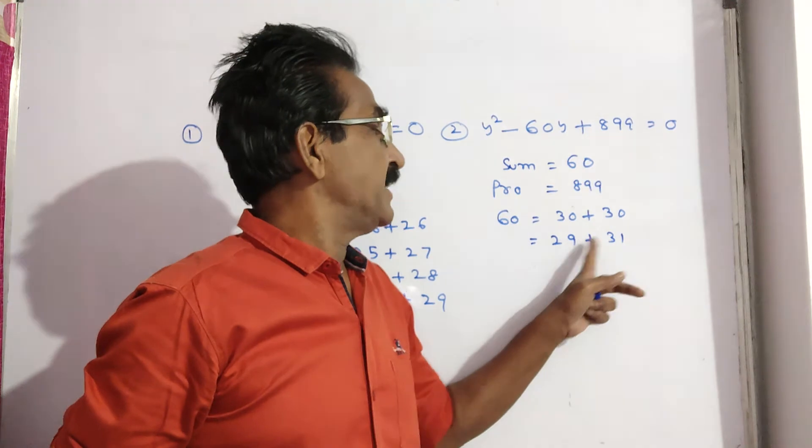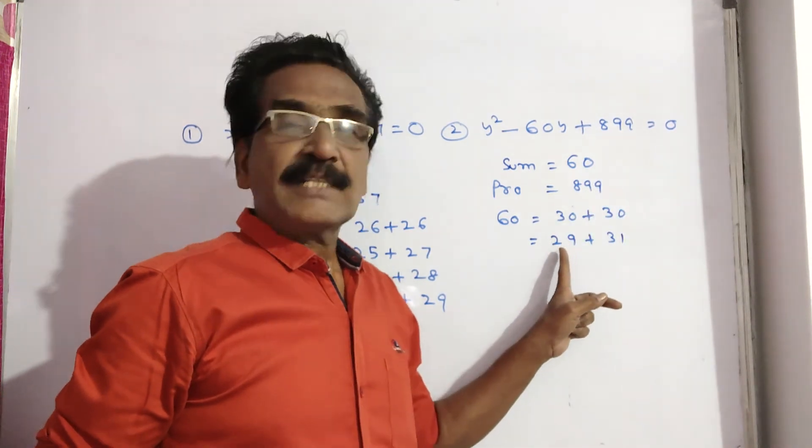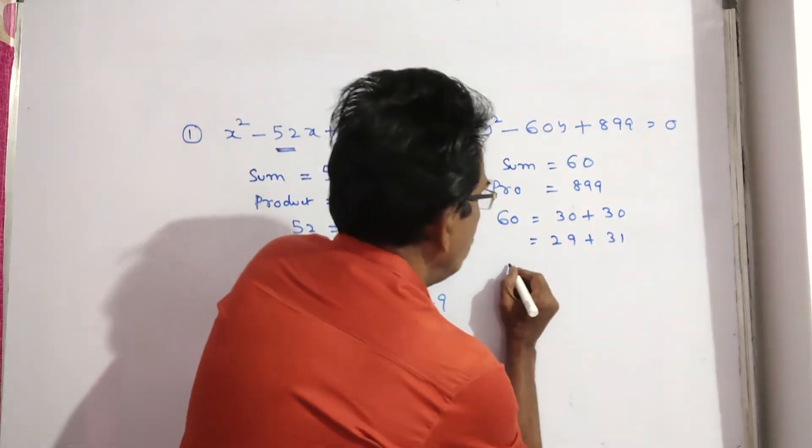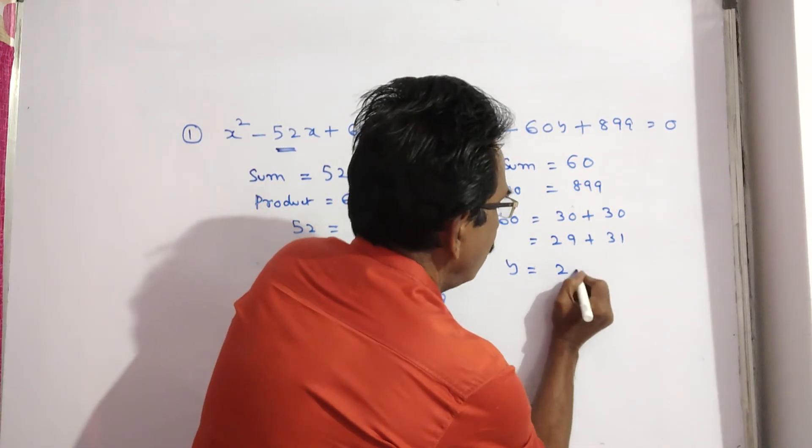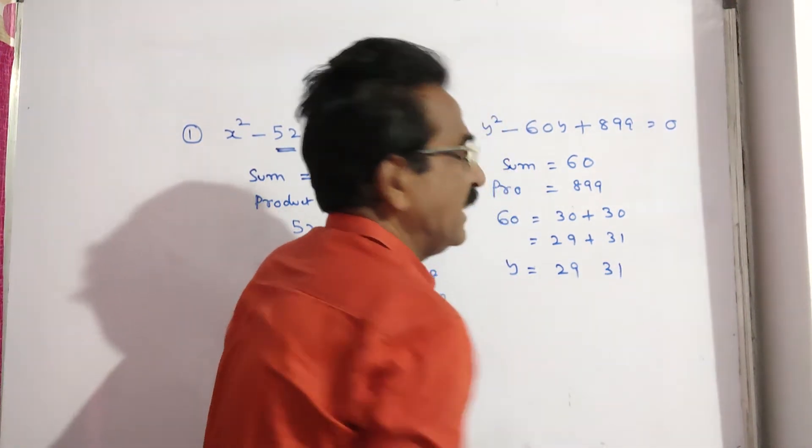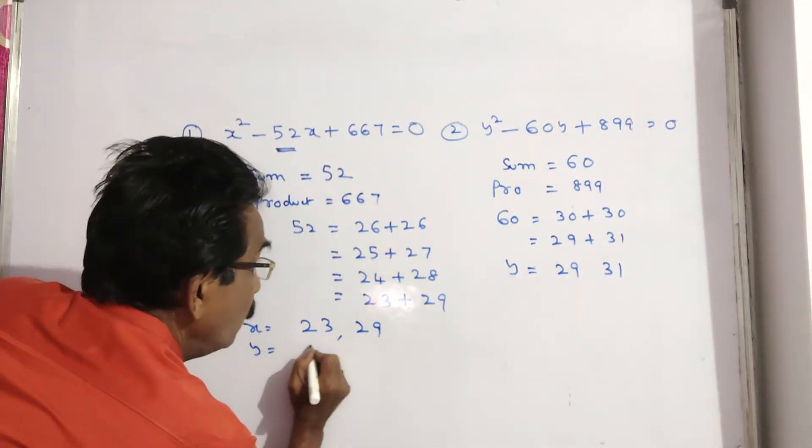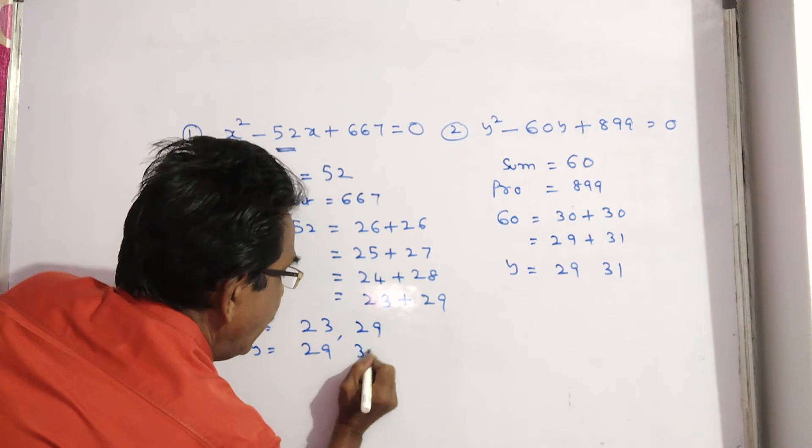29 into 31, 9 into 1 is 9. So mostly 29 into 31 must be our roots. So y is equal to 29 and 31.